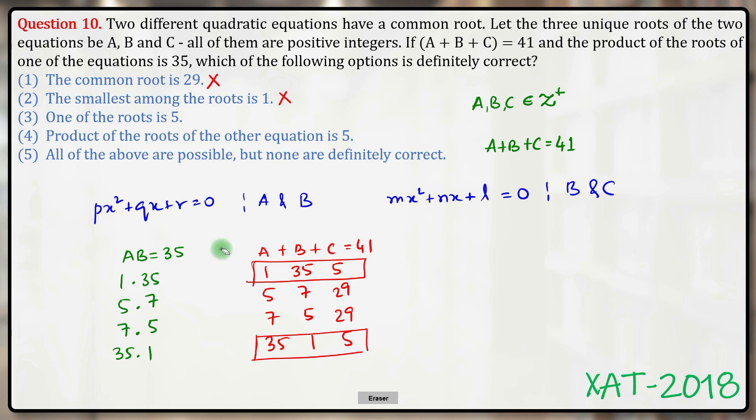One of the roots is 5. Let's check this case. Is it necessary that one of the roots is 5? Yes. Whether it's this case or this case or this or this, one of the roots is definitely 5. Which means answer option 3 should be the correct answer.